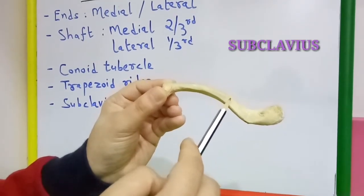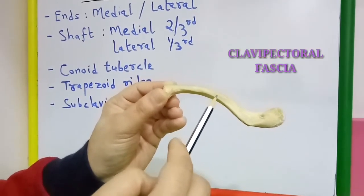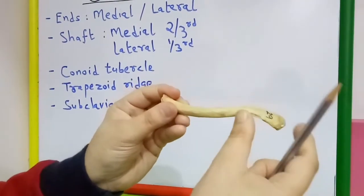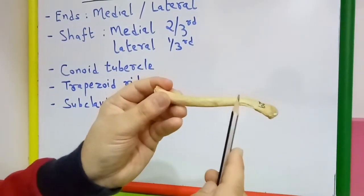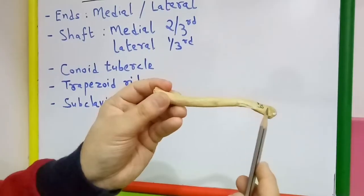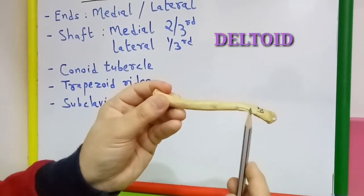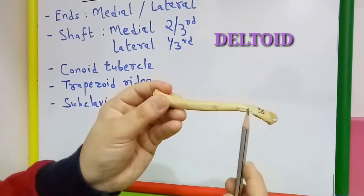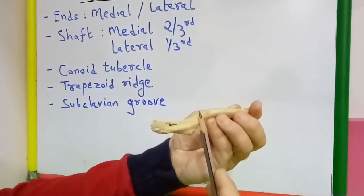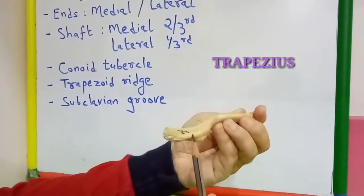The margin of the groove gives attachment to the clavipectoral fascia. Coming to the lateral one-third of the shaft, the anterior border gives origin to the deltoid muscle, whereas the posterior border receives insertion of the trapezius muscle.